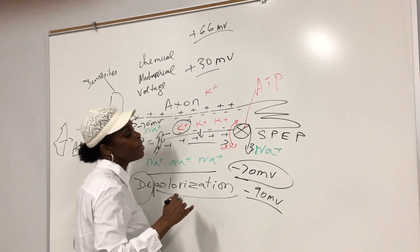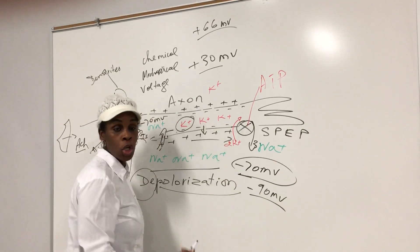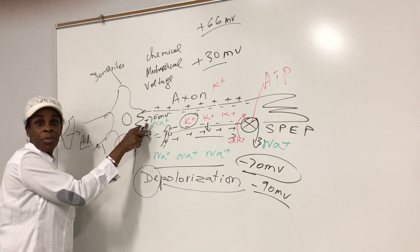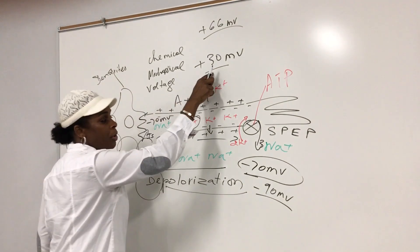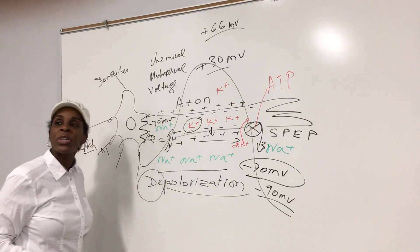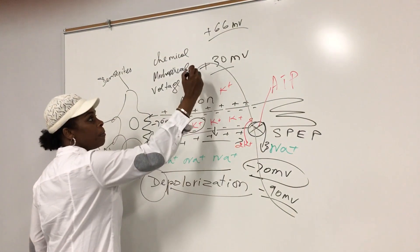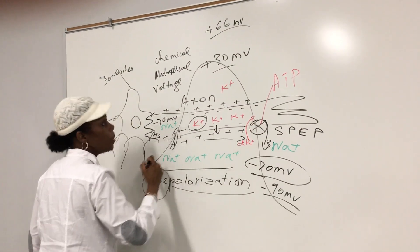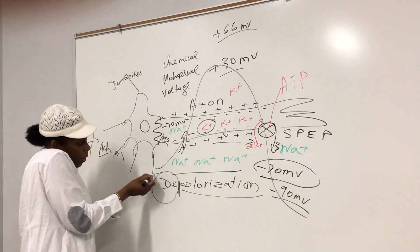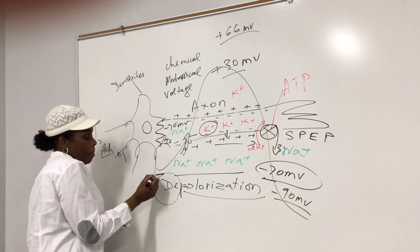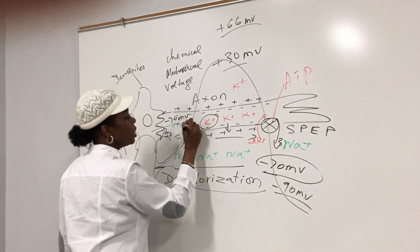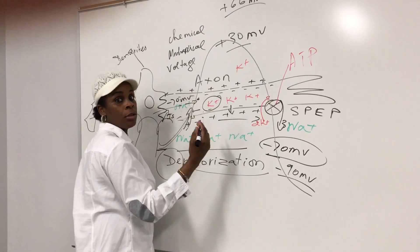That negative 90 millivolts — the process of going from negative 70 to negative 90 — is called hyperpolarization, because it's even more polarized than it used to be at the beginning. So the resting membrane potential went from negative 70 to positive 30 to negative 90. This whole process is called an action potential: polarization, depolarization, repolarization, and hyperpolarization. It used to be polarized, then it was depolarizing — got to zero, which is neutral, then continued to positive 30 from so much sodium coming in.